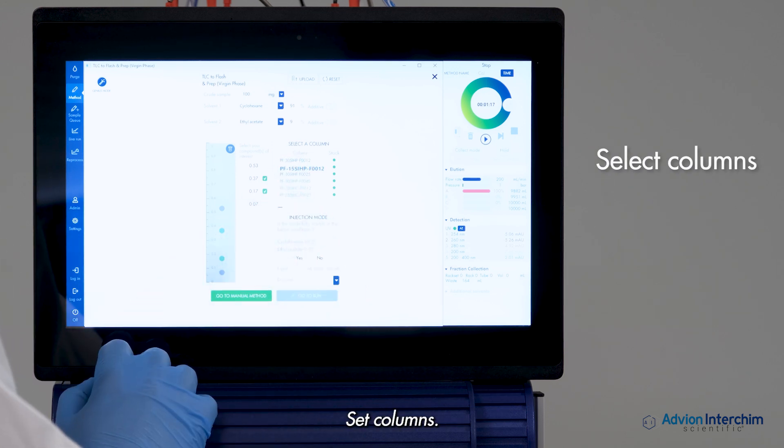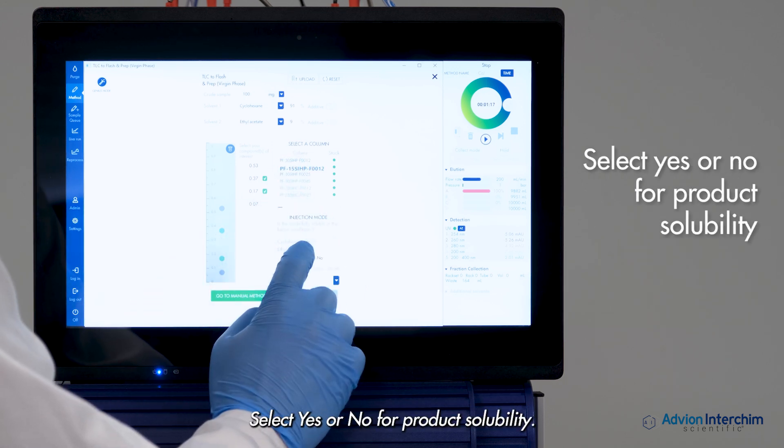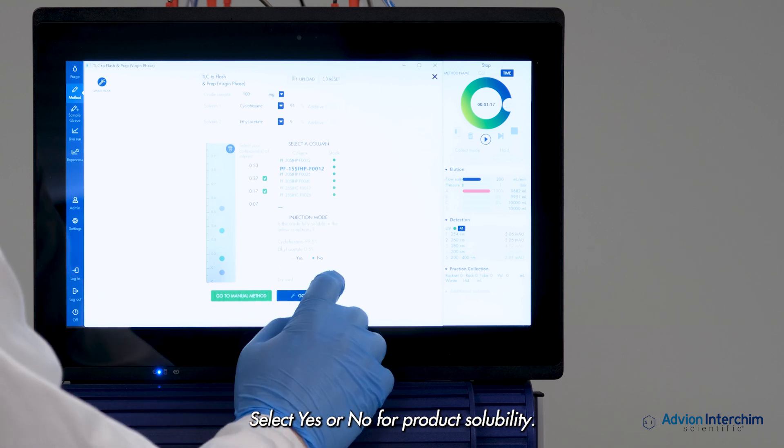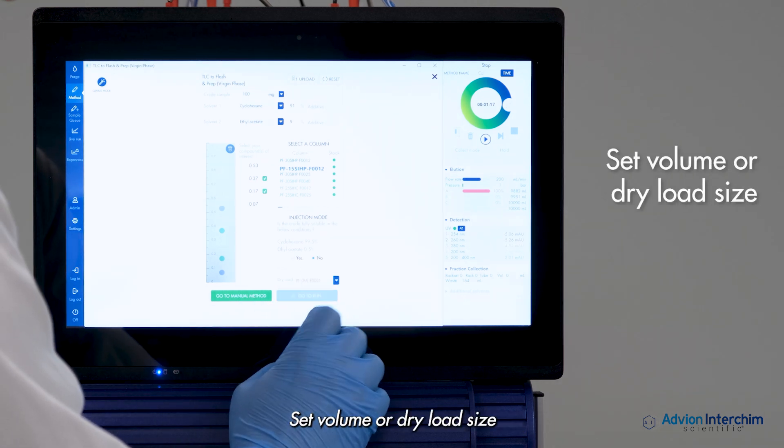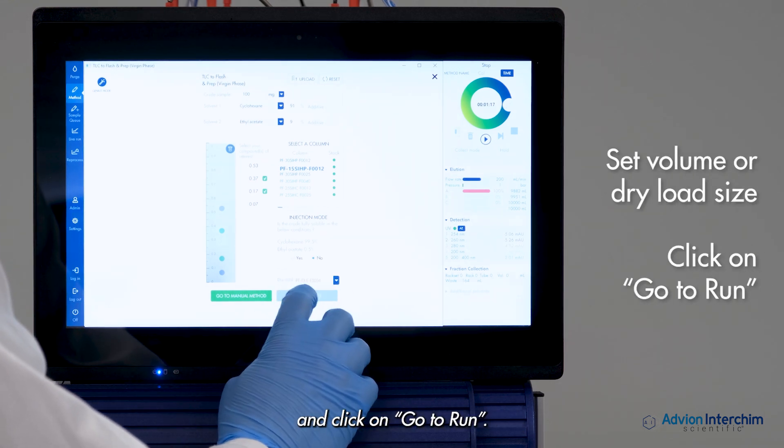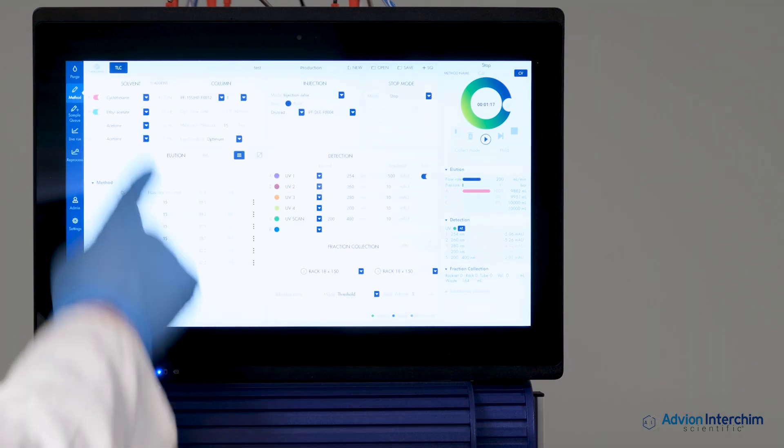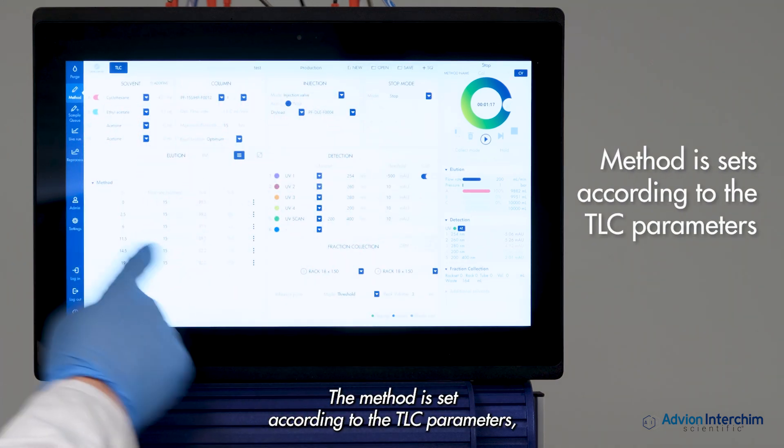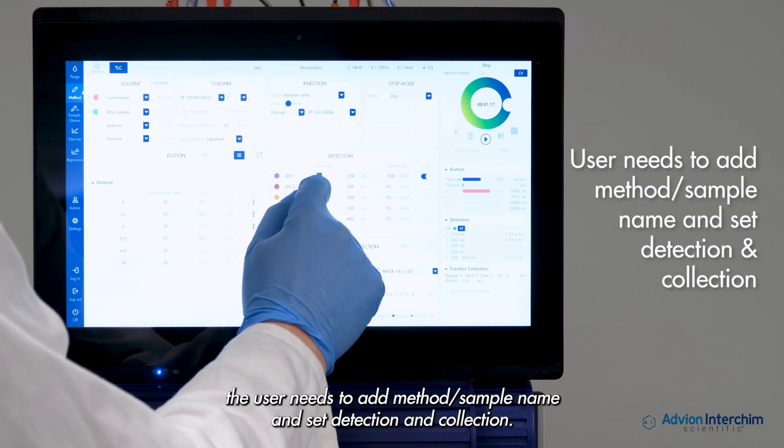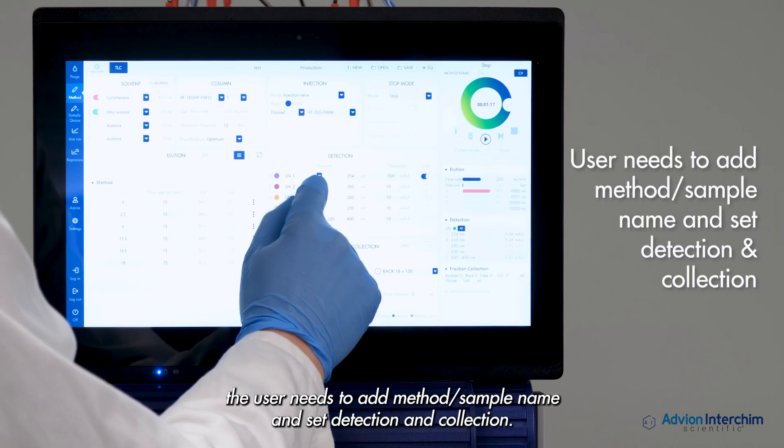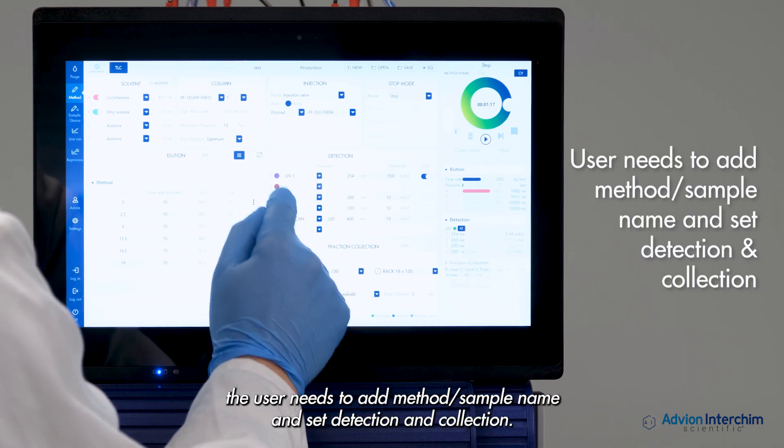Set columns, select yes or no for product solubility, set volume or dry load size, and click Go to Run. The method is set according to the TLC parameters. The user needs to add method, sample name, and set detection and collection.